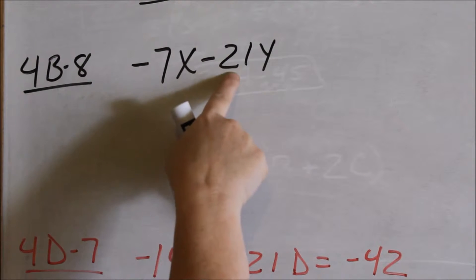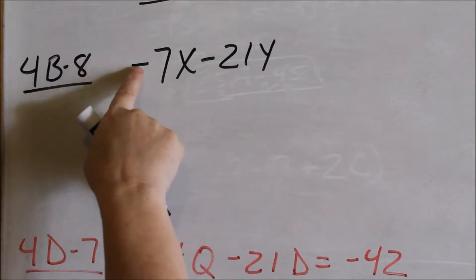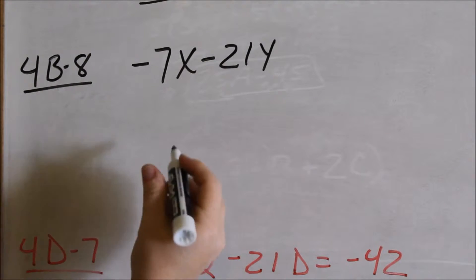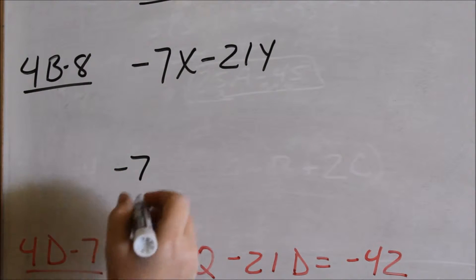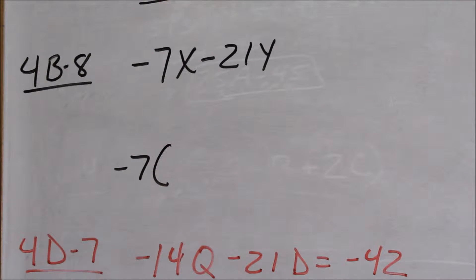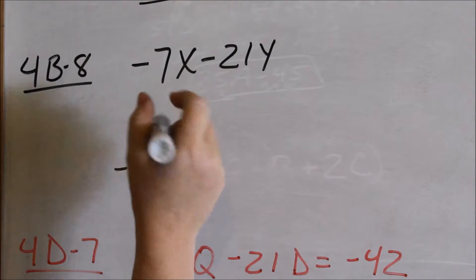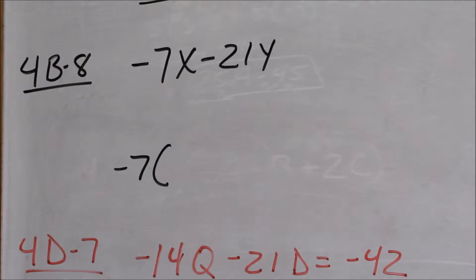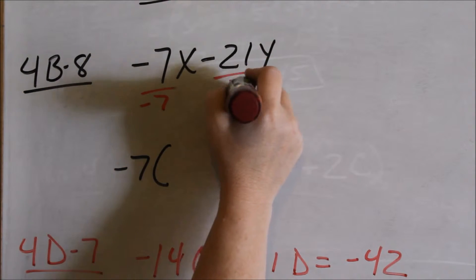Looking at 7 and 21, the most that I can divide out of each one is 7. But looking at my negatives, I can factor out a negative 7. Here's how you're going to write it: you're going to pull out a negative 7. Whatever you're factoring out or dividing out, you're going to write in front of your parentheses.